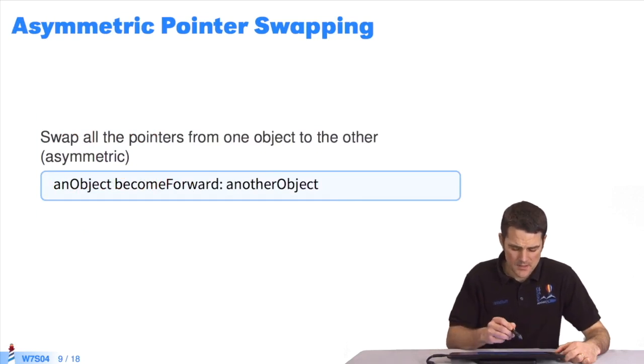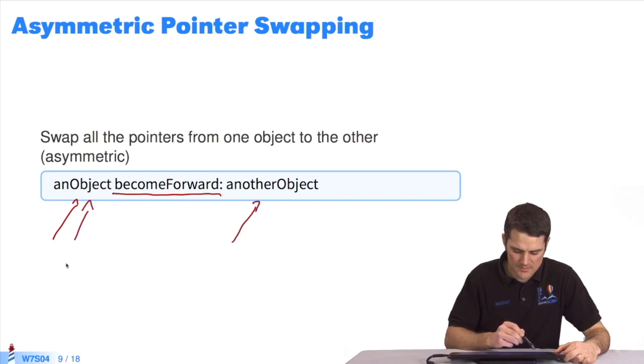The asymmetrical variant is become forward. It indicates that we want to swap pointers. Everything that pointed to this object will swap over to that object. But not the contrary. Pointers to this object stay the same.